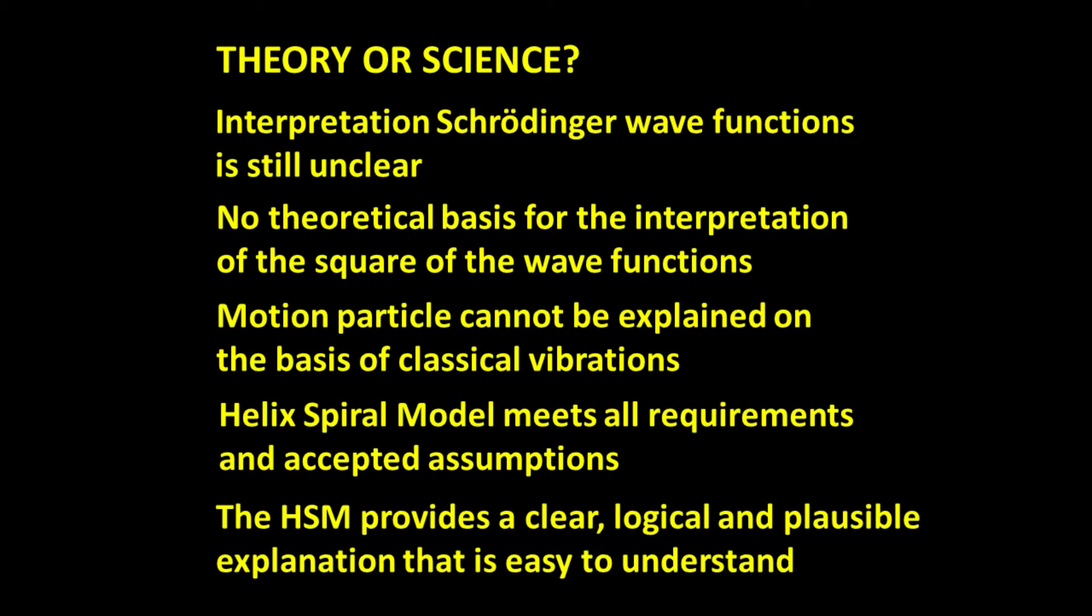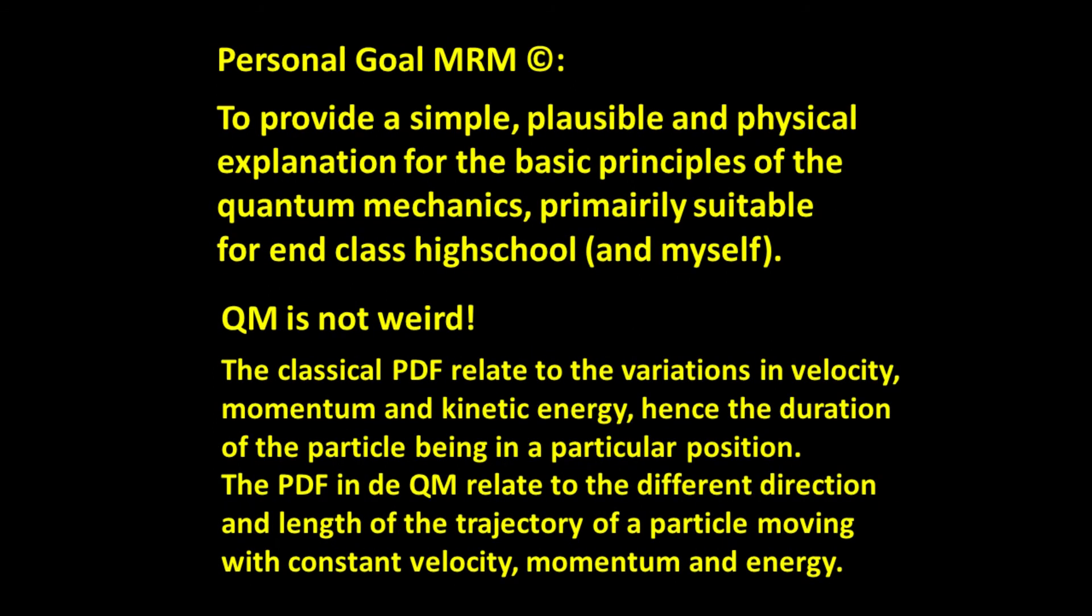A theory, does it make it also science? Within quantum mechanics, the interpretation of the Schrödinger wave function is still unclear. There is also no theoretical basis for the usual interpretation of the squared wave functions. In my elaborate analysis, I have clearly demonstrated that the wave functions and the square of the wave functions cannot be explained on the basis of classical vibrations of a particle. This has finally resulted in the development of my helix spiral model. If it is also scientifically correct, I honestly don't know. However, it meets all the boundary conditions and accepted assumptions within quantum mechanics. It certainly provides a very clear, logical and plausible explanation that is easy to understand. And that was my personal goal.